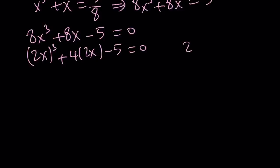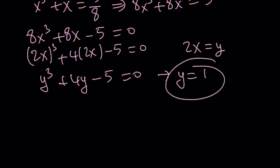You probably know: y cubed plus 4y minus 5 equals 0. Notice that the sum of the coefficients in this equation is 0. 1 plus 4 minus 5 is equal to 0. That means y equals 1 is a solution. Remember, we talked about this before in many different videos. So if y equals 1, then we can set 2x equals 1, and from here we get x equals 1 half. But what about the other solutions?